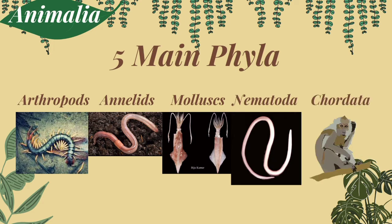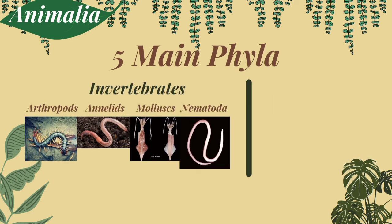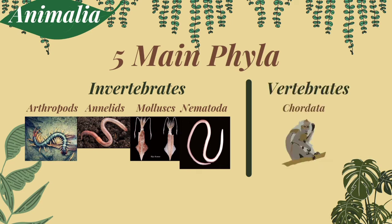The question is, which of these phyla are with backbone and without backbone? These four — arthropods, annelids, mollusks, and nematoda — are known as invertebrates, as they don't have a backbone, while the phylum chordata is the only one with a backbone. Note that there are subphyla under these five main phyla. We will get to know which phylum an animal belongs to by knowing their basic body plan.